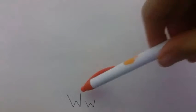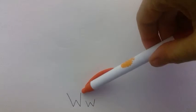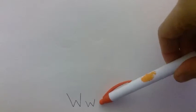Let's see what letters we're going to learn how to write today. First, we're going to draw the letter W. This is the uppercase W, and this is the lowercase W. You may notice they look similar. Let's start by writing the uppercase W.